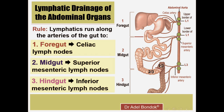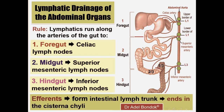The parts of the hindgut are: the left one-third of the transverse colon, descending colon, sigmoid colon, and the rectum. So lymph drainage of the abdominal organs goes to the celiac, superior mesenteric, and inferior mesenteric lymph nodes. The efferent lymphatics from these lymph nodes form the intestinal lymph trunk, which terminates into the cisterna chyli, and the cisterna chyli continues as the thoracic duct.